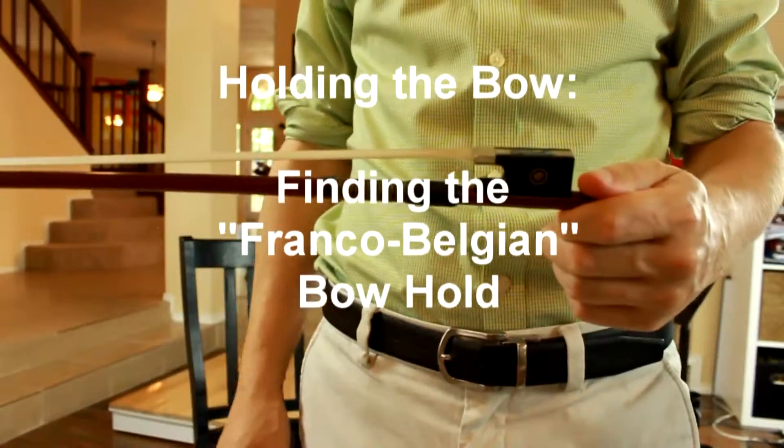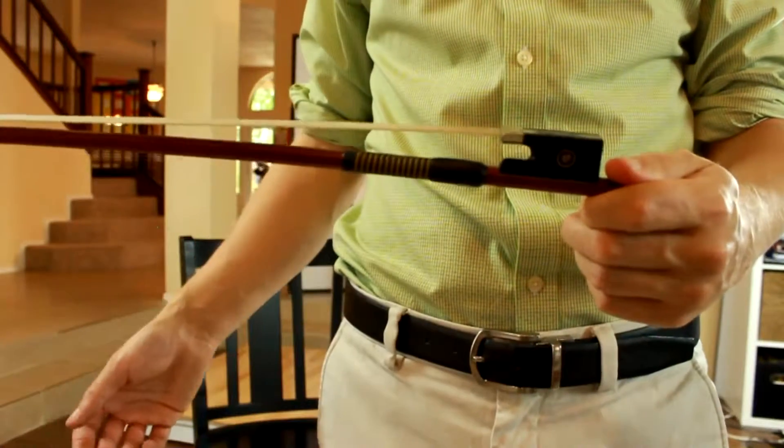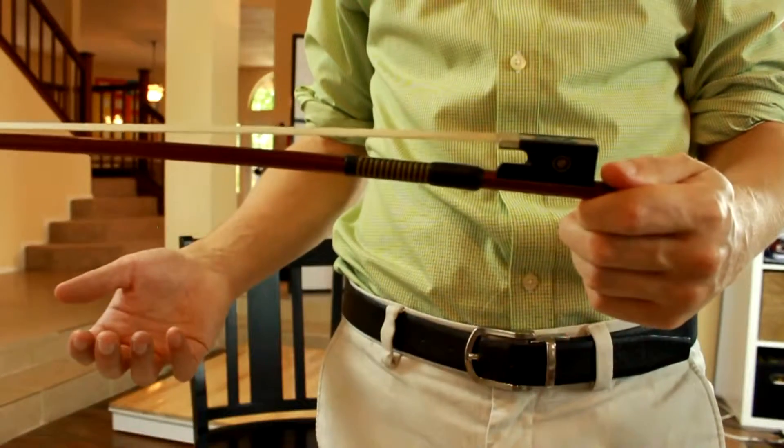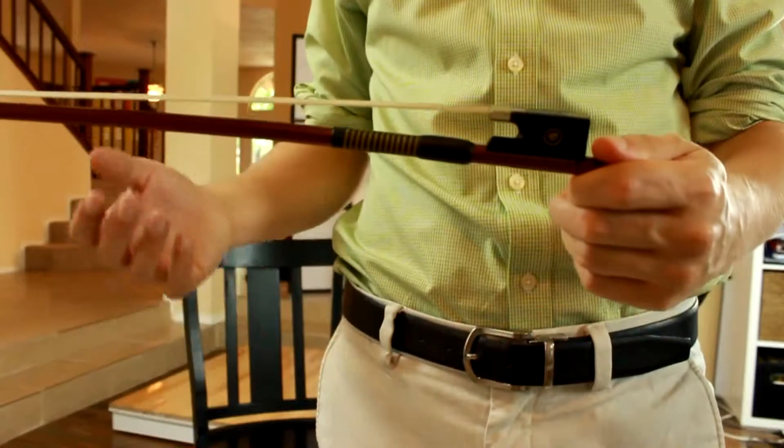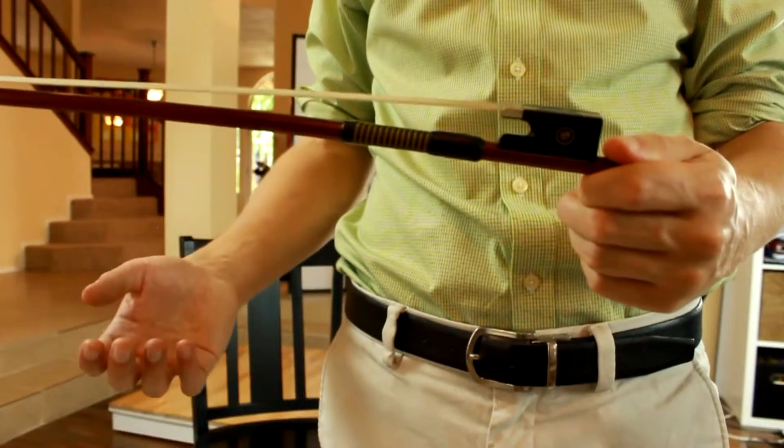Whenever I hand my students their bow, or when we're working on a bow hold, I like to start with the bow upside down. It's much more balanced and easy to hold this way.